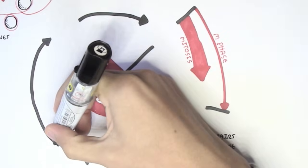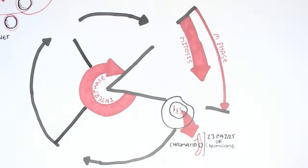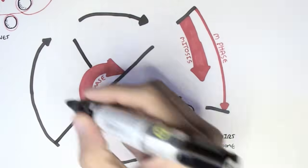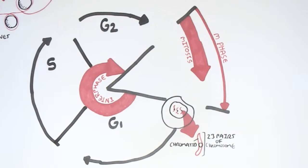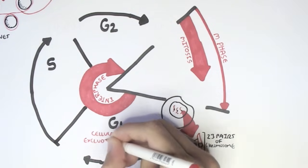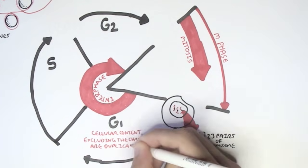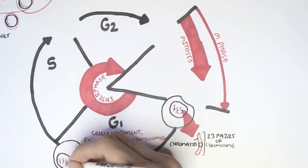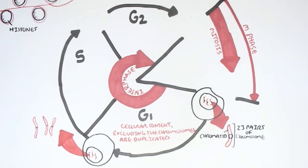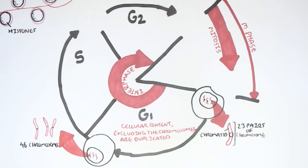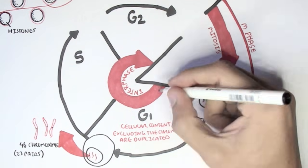The interphase can be divided into three stages. The first stage is growth 1, or G1. The second is synthesis, or S. And then growth 2, which is G2. This daughter cell will enter the G1 phase, which lasts about 10 hours. This is where we have the cellular content, excluding the chromosomes, duplicating. So essentially, the organelles are duplicating. However, the chromosomes are not. At the end of G1, it will still have 46 chromosomes and 46 chromatids, or 23 pairs of chromosomes.